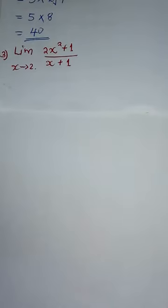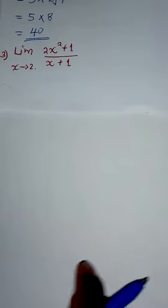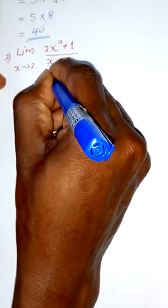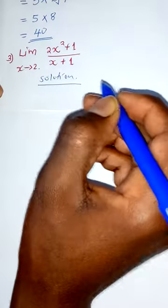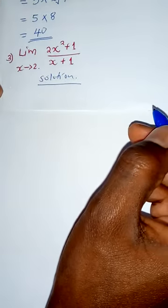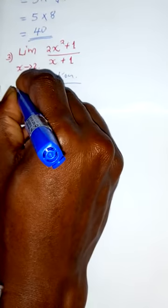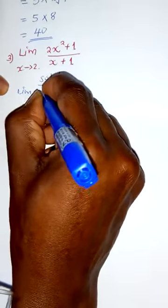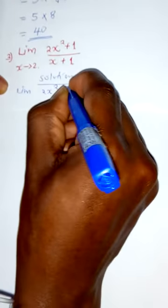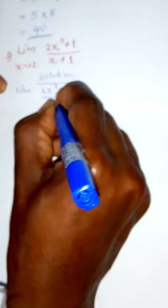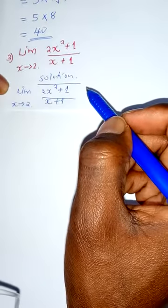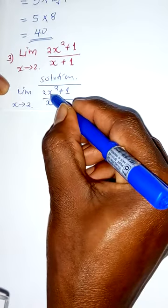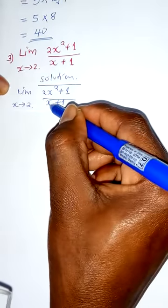Example number 3: we have the limit of (2x squared plus 1) over (x plus 1) when x is approaching 2. We try to simplify it. We replace 2 where we have x in both the numerator and denominator.